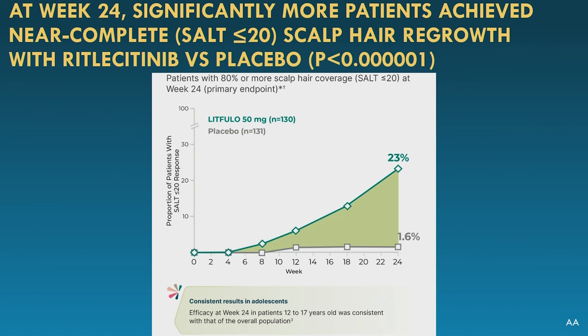How did ritlicitinib perform? Taking patients with at least 50% hair loss or more, the study looked at what percentage achieve near-complete regrowth — defined as 20% hair loss or less. At six months, 23% of treated patients achieved that compared to 1.6% of placebo. It's a high bar — taking people with very severe hair loss and getting at least 80% of scalp hair back. The drug definitely works, but patients need to be patient and consistent over time.